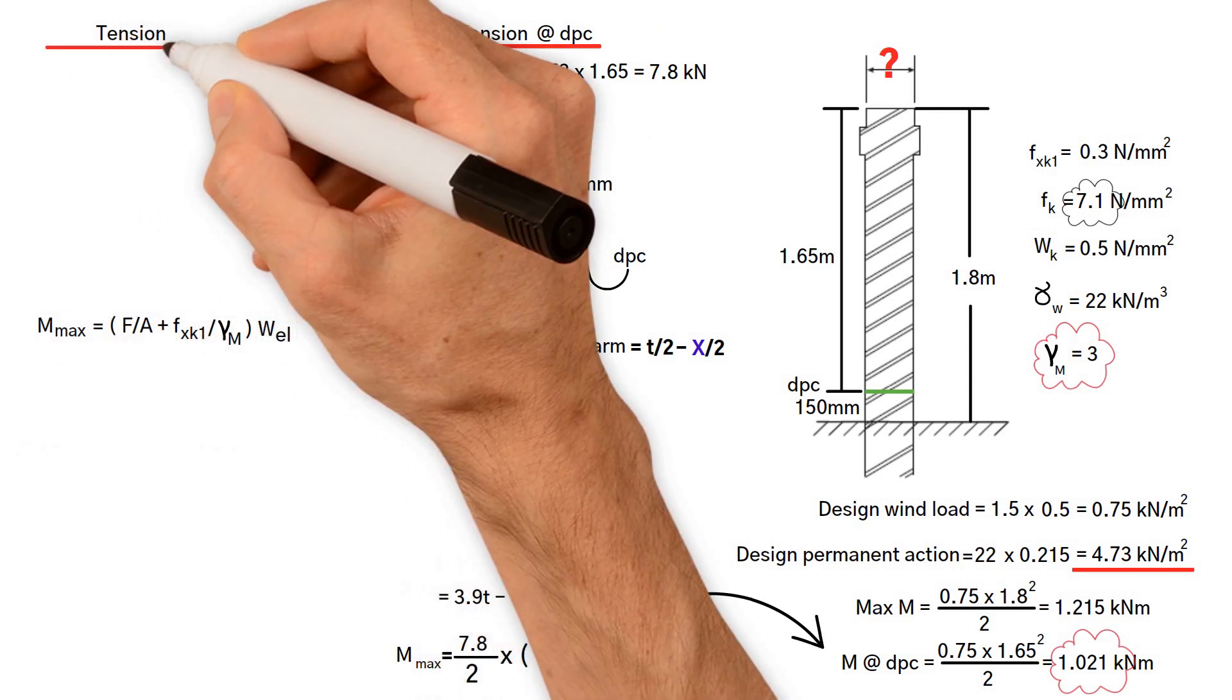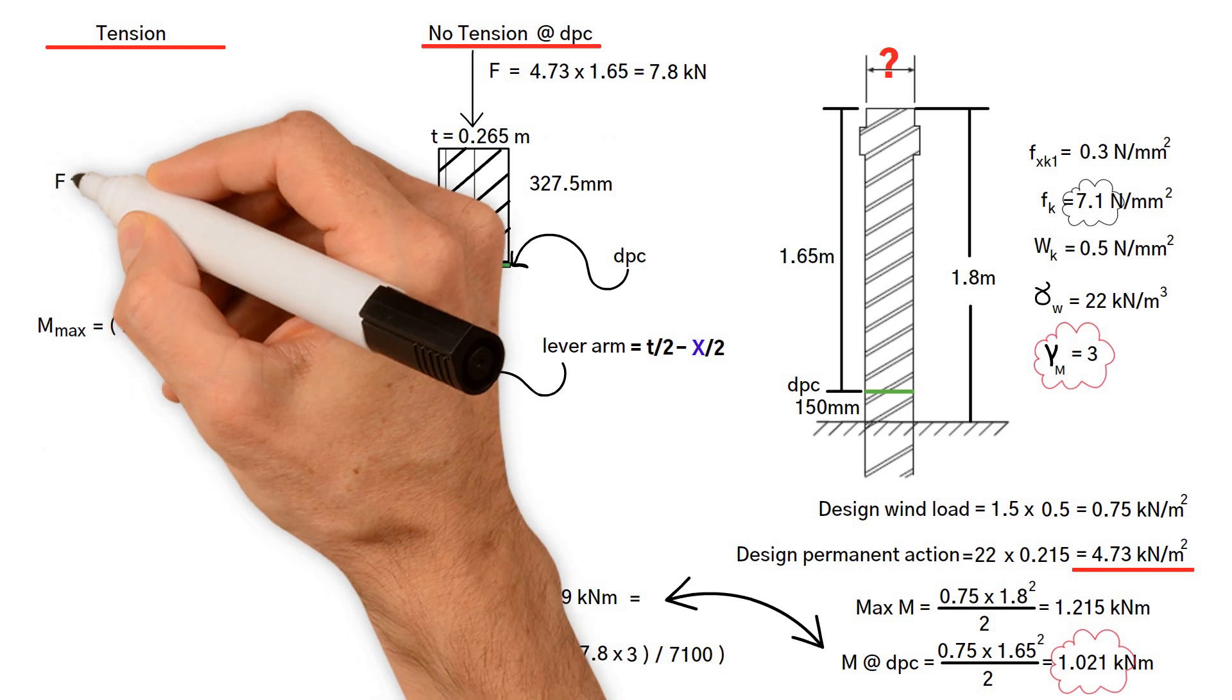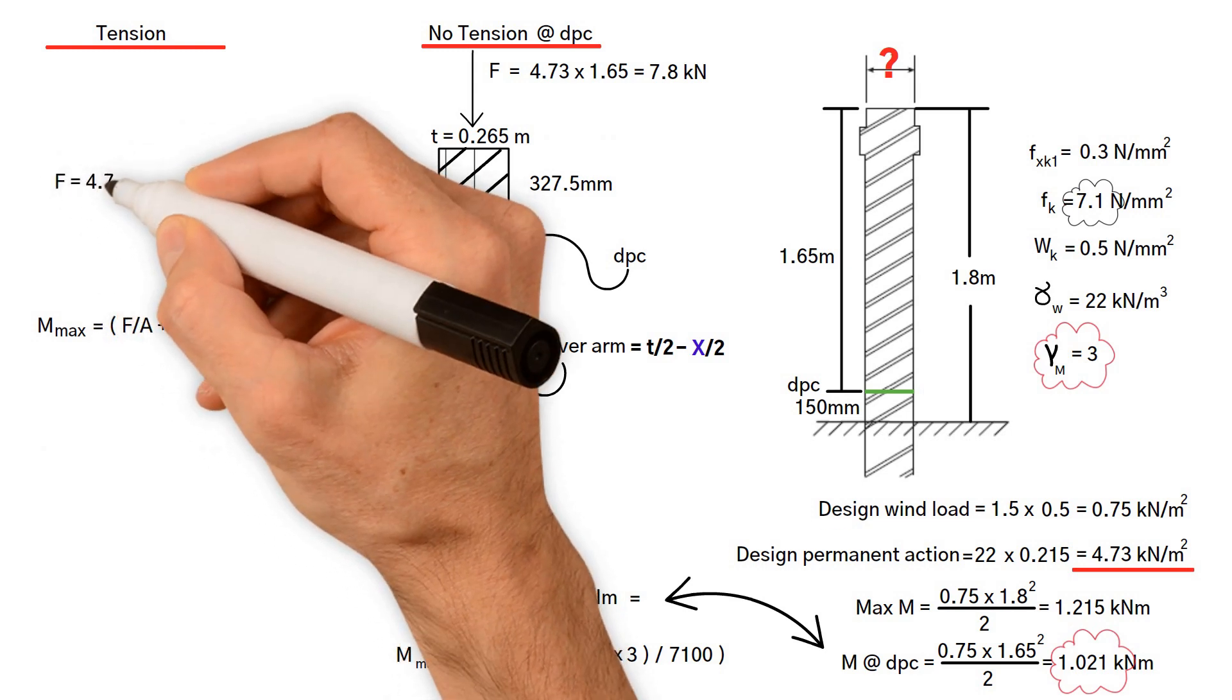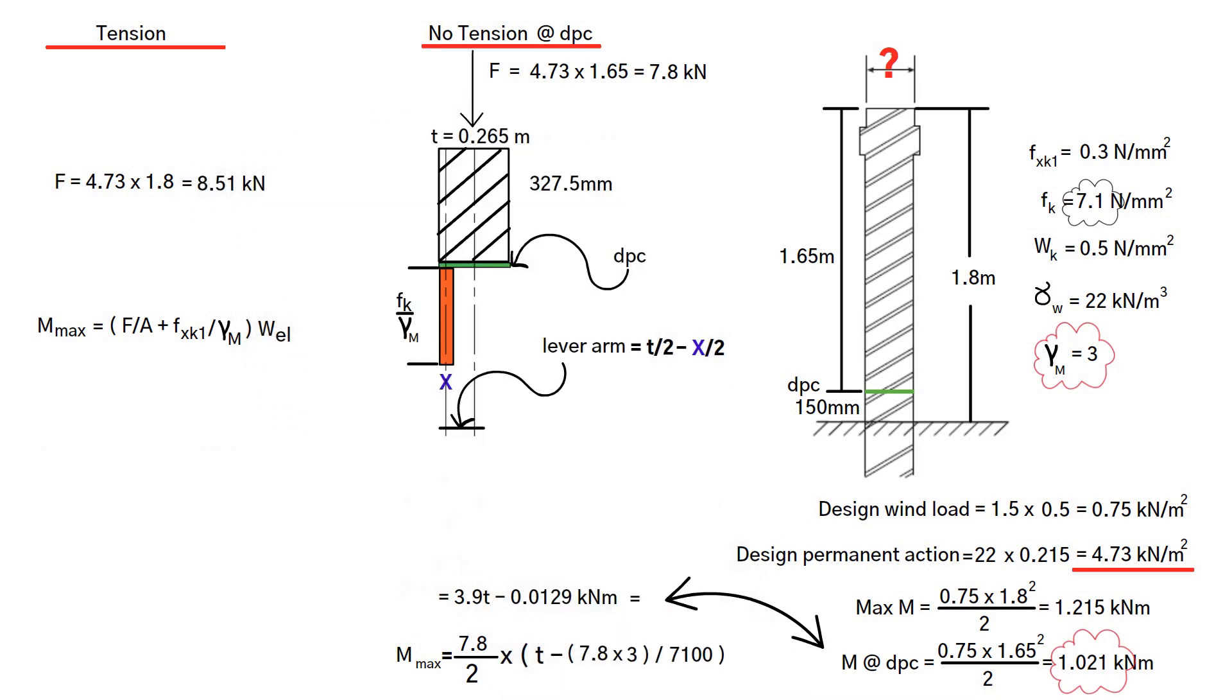Finally, we will examine the tension case at the base of the wall. The vertical force F equals 4.73 times the wall height of 1.8 meters, giving us 8.51 kilonewtons.